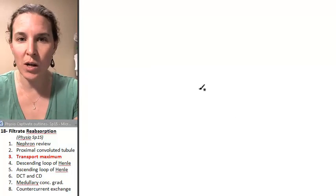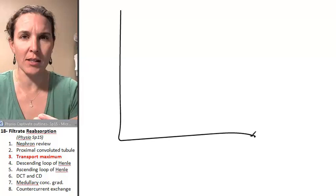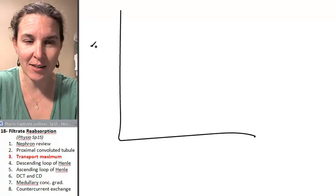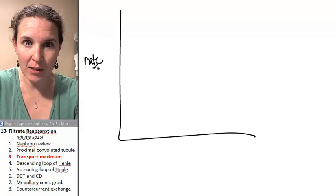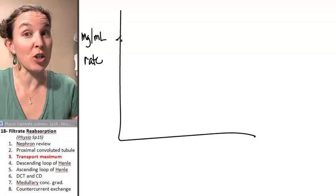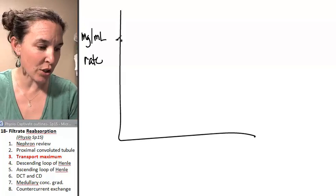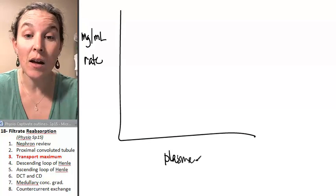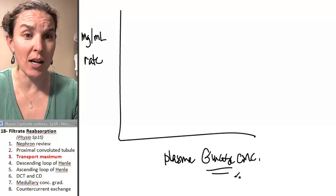So to illustrate this concept, I want to do a graph for you. On the y-axis, we're going to throw on a rate. The rate is going to vary depending on the line that I'm drawing, but all of my rates are going to be milligrams per milliliter. We're going to compare that to plasma glucose concentration.